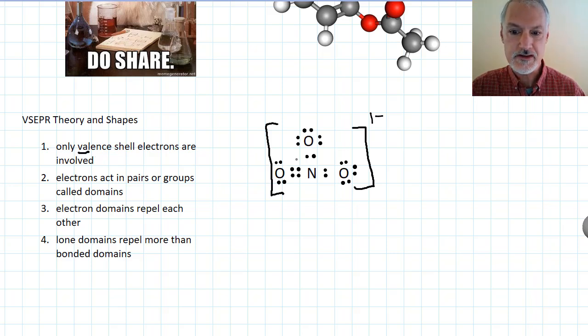Now, electrons act in pairs. That's why you see a lot of them paired together and sometimes those pairs will act in groups. Let me show you an example of what I mean by that. So here we have an electron pair, here we have an electron group, and here we have an electron pair. We call these collectively under one term, we call them electron domains.